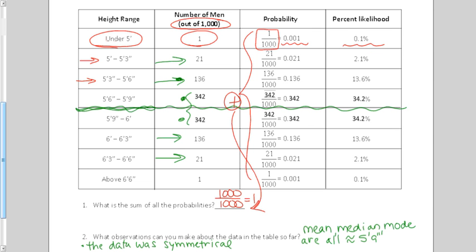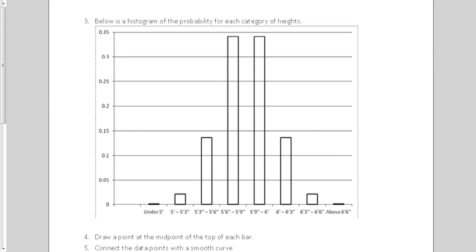So if we turn this paper over and we look at the back, it says draw a histogram for the probability of each of the category heights. So we're going to take these probabilities right here and we're going to put them on the graph, and there they are. So here were my heights, my categories for how tall you were, and then these were my probabilities written as a decimal. So you can see the biggest ones were in the middle, and then it tapered off on the edges.